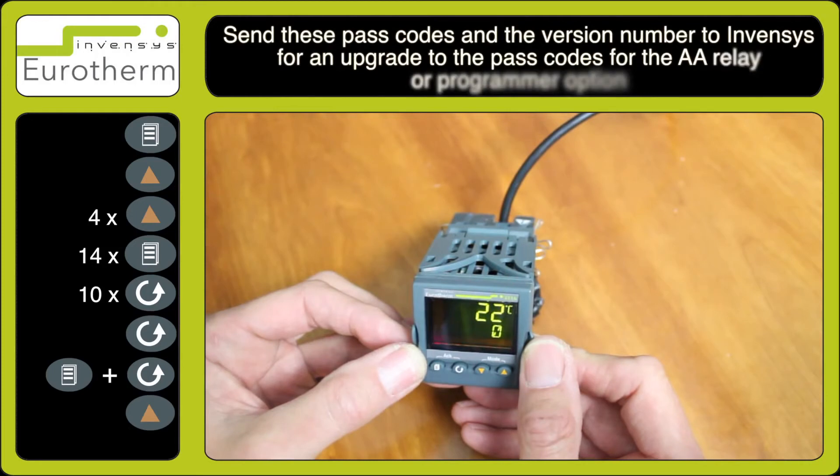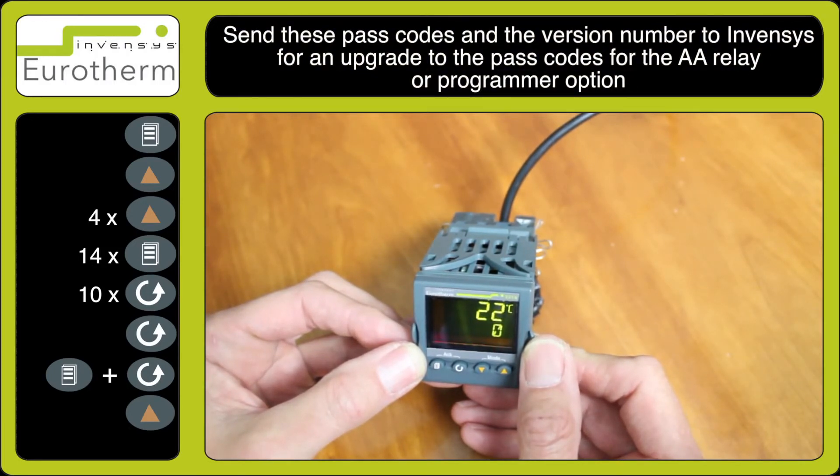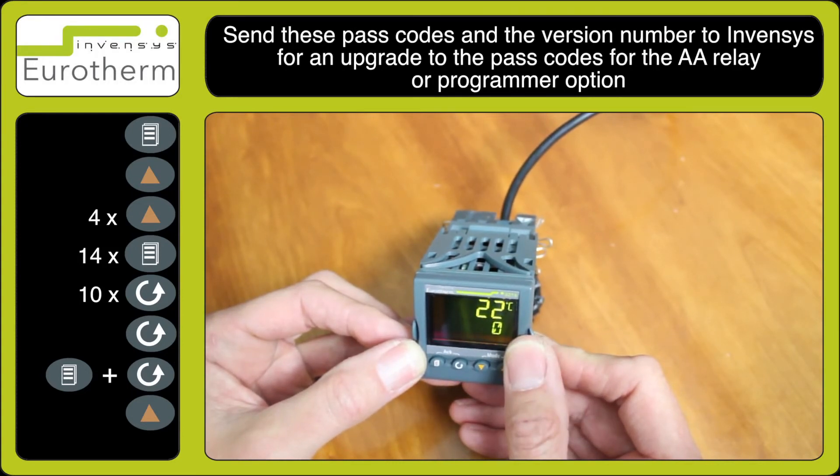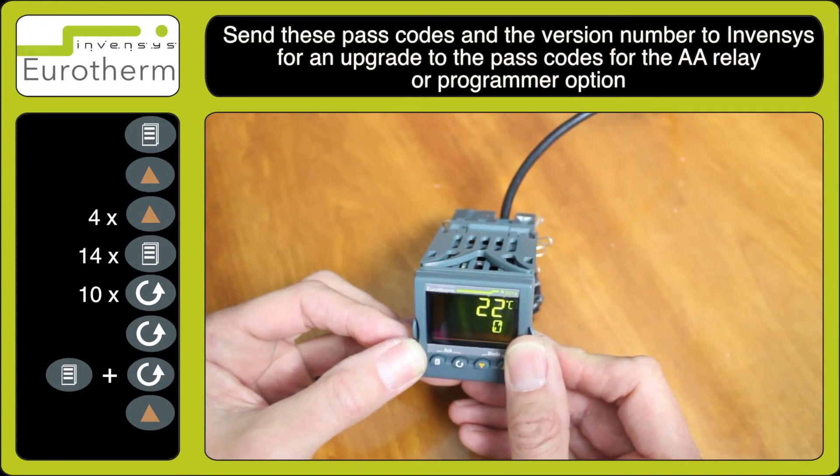You can now use those codes and the version number to send to InvenSys for a passcode upgrade for the AA relay or programmer option.